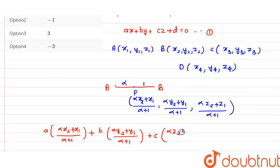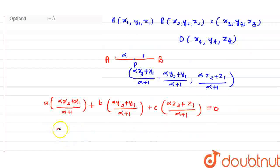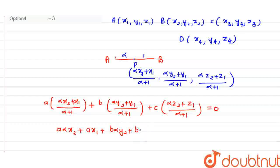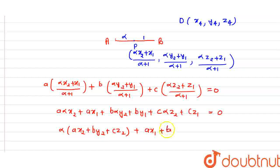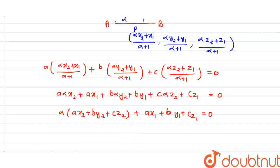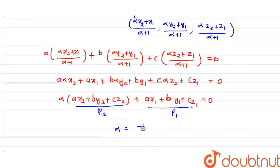Multiplying through by (alpha+1): alpha·(Ax2 + By2 + Cz2) + (Ax1 + By1 + Cz1) = 0. Let p1 = Ax1 + By1 + Cz1 and p2 = Ax2 + By2 + Cz2. Then alpha = −p1/p2. Using the same concept for side BC, beta = −p2/p3. Similarly, gamma = −p3/p4, and delta = −p4/p1.